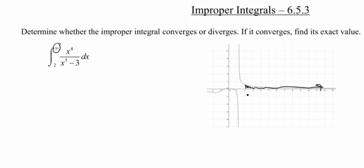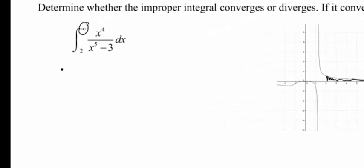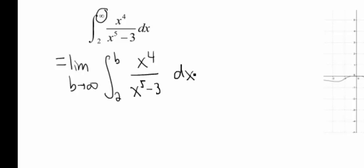But our integral starts at 2, so that doesn't bother us. Okay, so I'm going to go ahead and change this then. We're going to say the limit as b approaches infinity of the integral from 2 to b of x to the 4th over x to the 5th minus 3 dx.